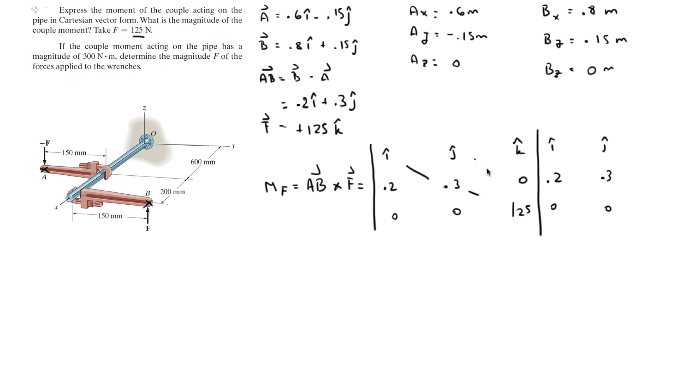You do your positive diagonals. So the first one is 0.3 times 1.25 times I, that's 37.5I. Second one is 0, third one is 0.